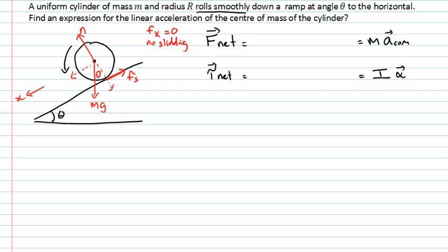This angle inside here is θ. So down the plane in the positive x direction, I have m times g times the sine of the angle θ, because we want the opposite side, minus the force of static friction, Fs.